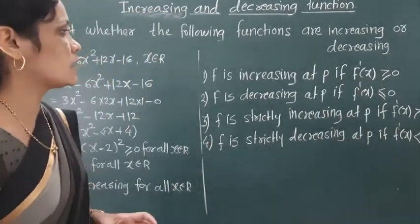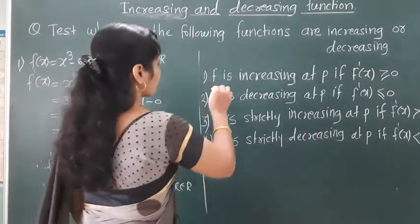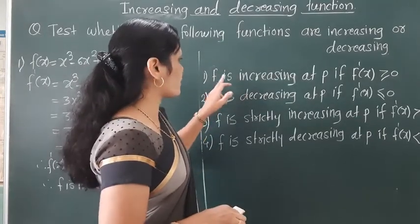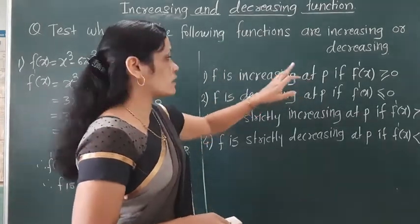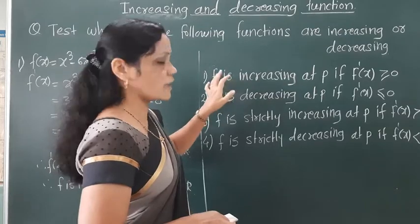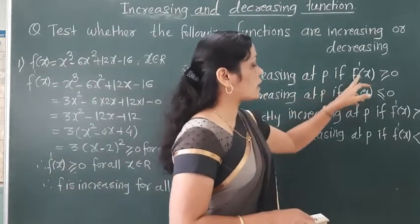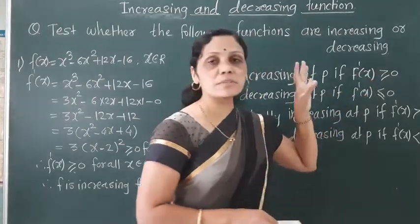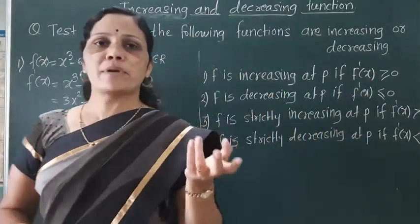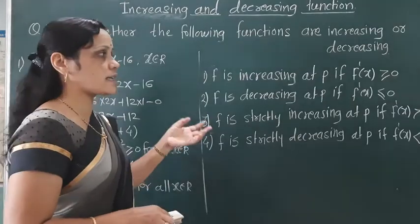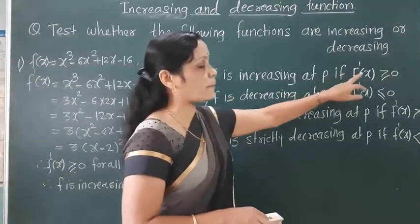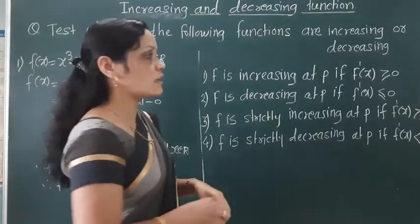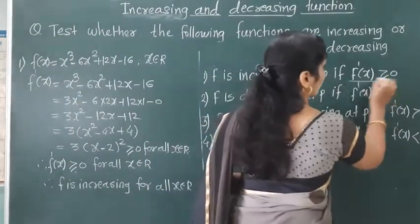There are rules. A function F is increasing at a point P. Function F is increasing if F'(x) is greater than or equal to 0. F'(x) means we differentiate F(x). F'(x) greater than or equal to 0 means the function is increasing.